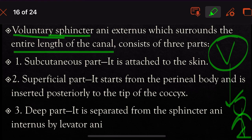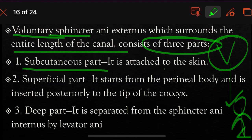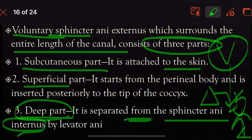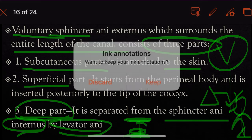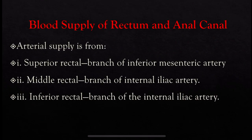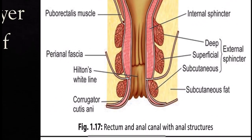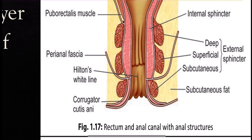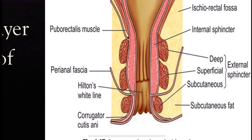The external anal sphincter surrounds the entire length of the canal and consists of three parts: the subcutaneous part, which is attached to the skin; the superficial part, which starts from the perineal body and is inserted posteriorly to the tip of the coccyx; and the deep part, which is separated from the internal sphincter by the levator ani muscle.